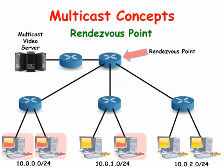PIM Sparse Mode is a better method for using multicast over a network. It uses a pull technology. All the routers on the network learn the network address of a specific router that is responsible for managing multicast streams, called the rendezvous point. There are various methods for giving all the routers the IP address of the rendezvous point and we will look at them in future videos.